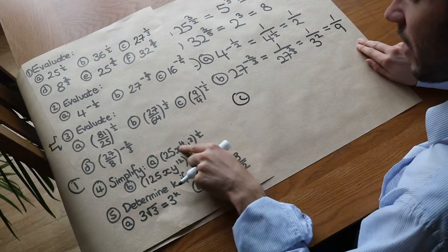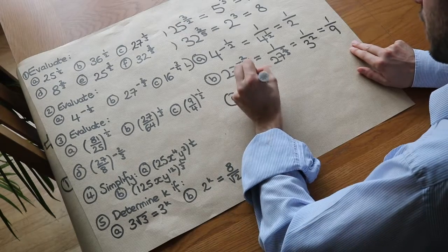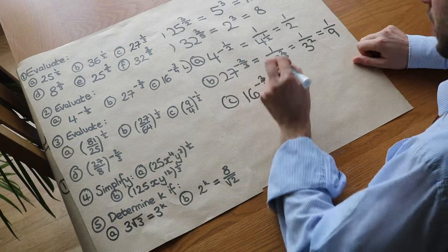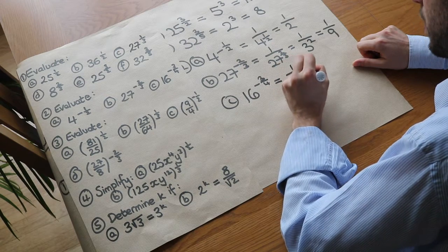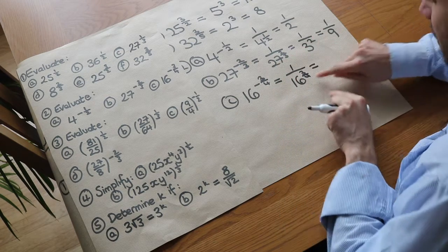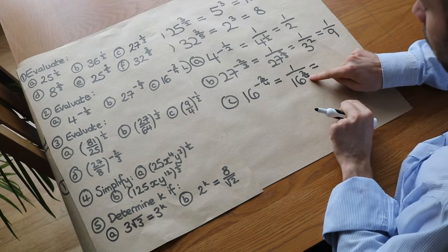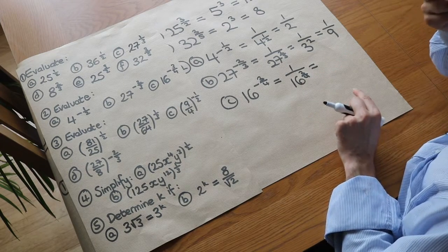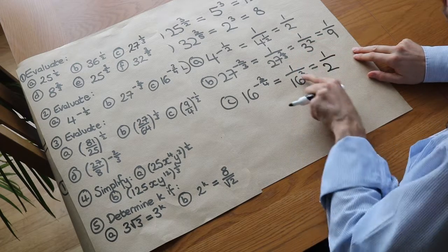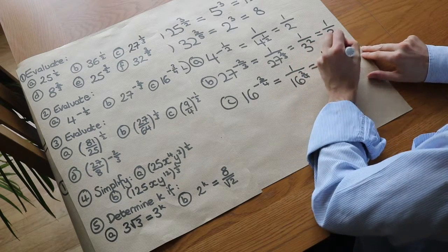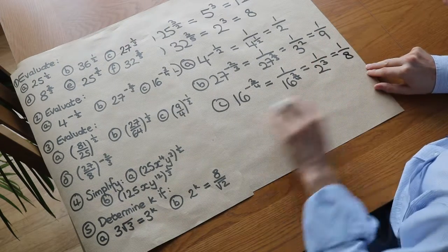For 16 to the power of negative 3 quarters: first deal with the minus to get 1 over 16 to the 3 quarters. Then deal with the denominator — we take the fourth root of 16. What to the power of 4 is 16? It's 2, since 2 to the power of 4 is 16. We still have that 3 in the numerator, so it's 2 cubed, which is 8, giving a final answer of 1 over 8.